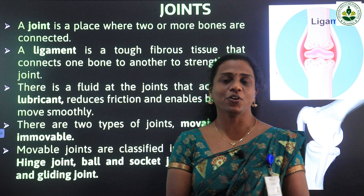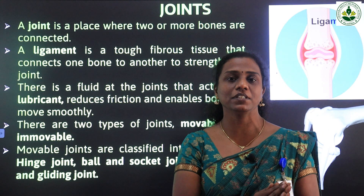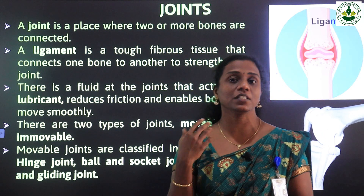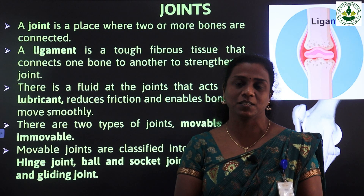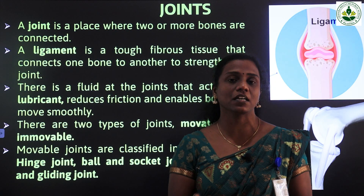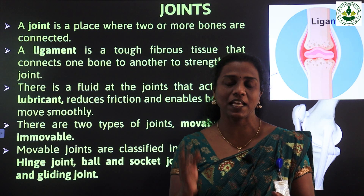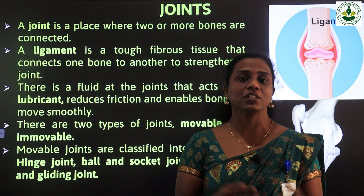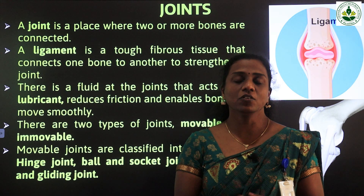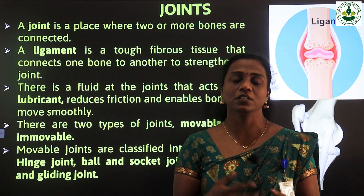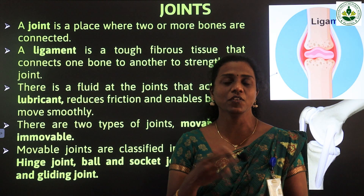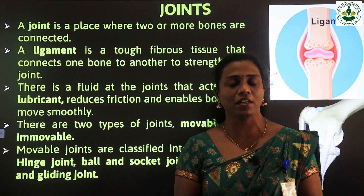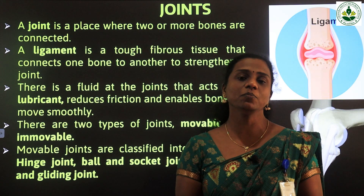So today we are going to study about joints. Last class we completed the skeletal system — we studied how it is made and which are the important parts. The important parts of the skeletal system are skull, ribcage, backbone, and limb bones. We studied the detailed explanation for each part and also studied about bones, their structure, parts, and everything. Now we are going to study about joints. Our body is fully made up of bones, so how are the bones connected?